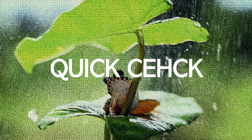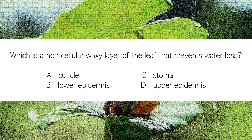It is time for our quick check. Which is the non-cellular waxy layer of the leaf that prevents water loss? A. Cuticle, B. Lower epidermis, C. Stoma, D. Upper epidermis. Kindly write your answer in the comment box below.